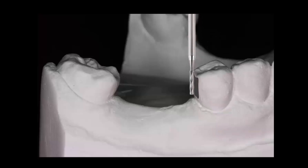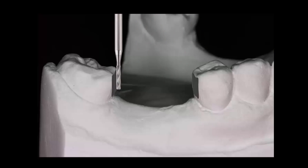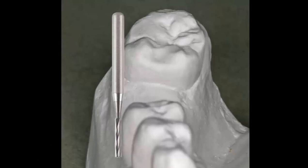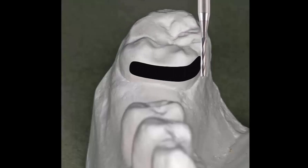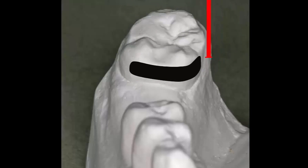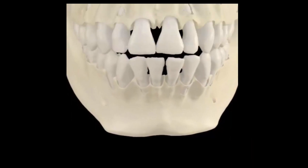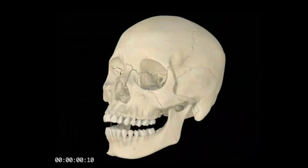A carbide burr is being used to prepare parallel guide planes on this particular cast as a demonstration of how you would like to have those guide planes formed. That same instrument is then used to create guide planes on a molar that's tipped mesially and lingually, creating that guide plane while preserving a distolingual undercut where the clasp can flex into that area and retain the removable partial denture.